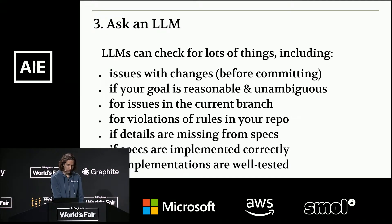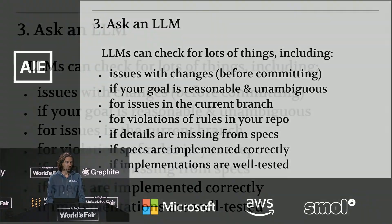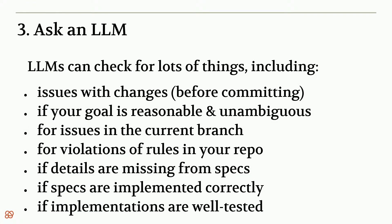The third detection method is asking an LLM. There are many things to check for: issues before you commit with your current change, whether what you're trying to do makes sense, issues in the current branch, violations of rules in your style guide or architecture documents, missing details in specs, specs that aren't implemented, code that isn't well tested, or any other custom checks you want. In Sculptor, we're enabling people to extend the checks so they can add their own best practices into the code base and make sure they're continually checked.